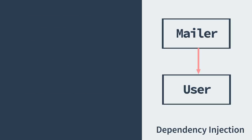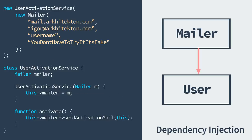If we take a look at our example, you can see that instead of the user activation service worrying about instantiating the mailer object, it just receives it from the outside and uses it when needed. This helps the service to only be in charge of the business logic and not riddled with the instantiation logic of its dependencies.